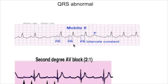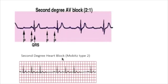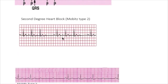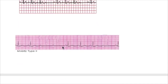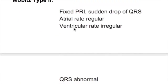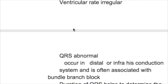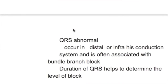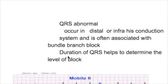Here is another second degree block type two: fixed PR interval with a sudden drop of QRS. In Mobitz type two, the QRS is abnormal and it occurs in the distal or infra-His bundle conduction system, and is often associated with a bundle branch block.